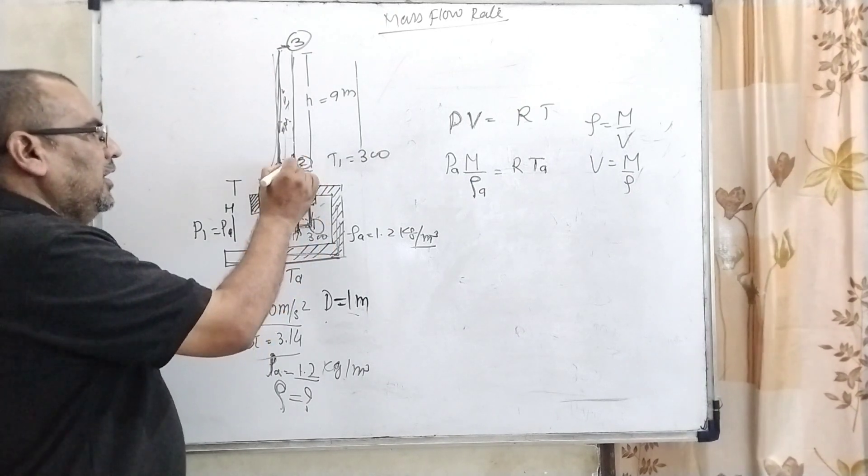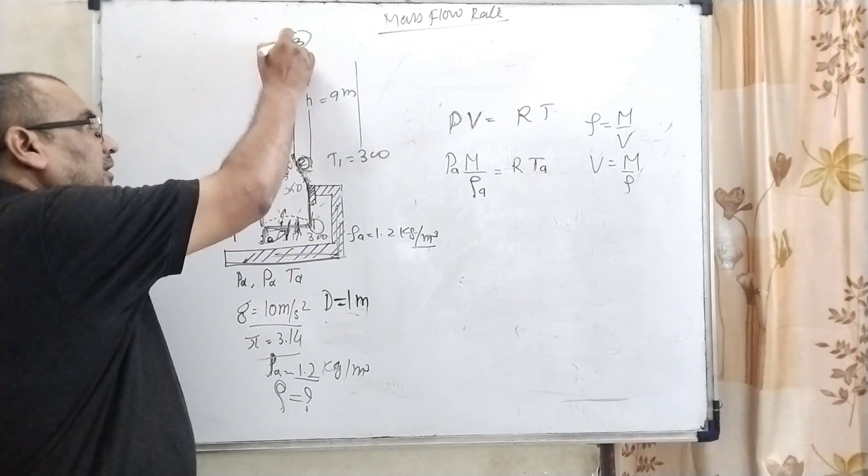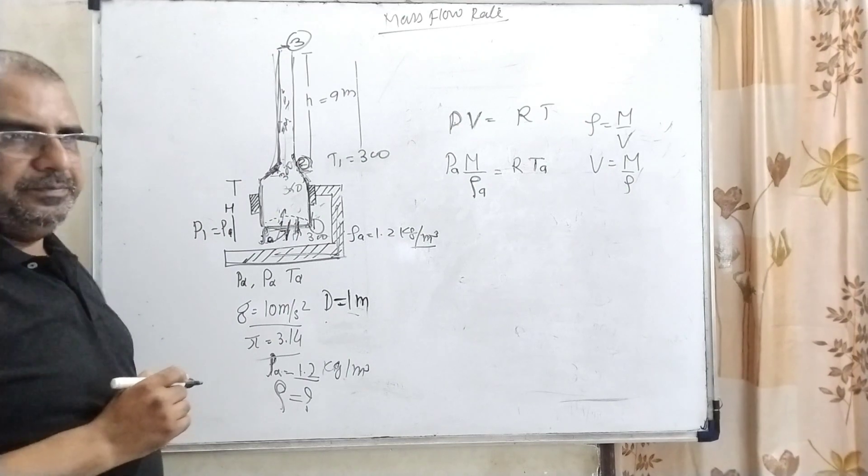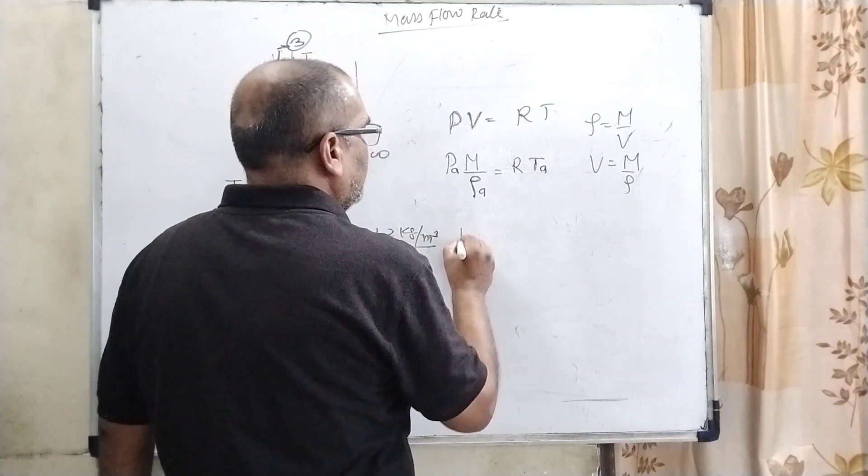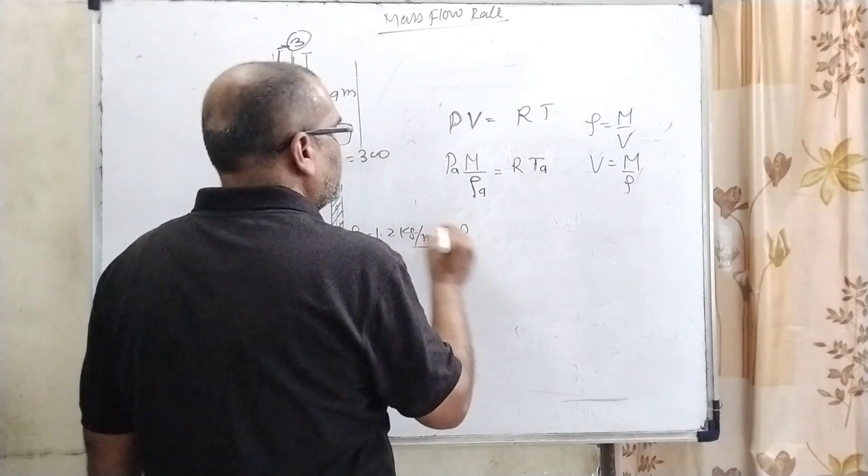Now for the second condition at point 2, because we have divided into 3 points: at the bottom is point 1, at the neck is point 2, and at the top is point 3.